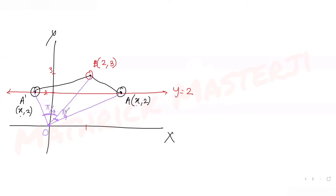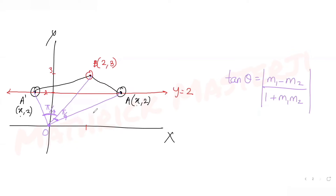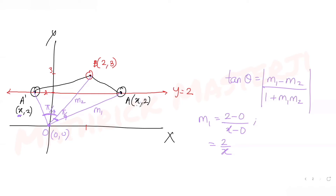Since we know the acute angle between the two line segments, we can use the formula: tan θ = |m₁ − m₂| / (1 + m₁·m₂). Finding the slopes: the slope of line OA is m₁ = (2 − 0)/(x − 0) = 2/x. Similarly for OA', the slope is also 2/x with a different x coordinate. The slope m₂ of line OB is 3/2.